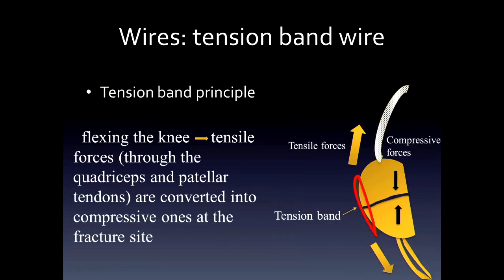Wires are also used to compress a fracture site. This is called the tension band principle, and it's used in areas such as the knee and the elbow, where muscular forces tend to pull the fracture apart. The tension band principle is shown on the left: flexing the knee, for example, produces tension forces or tensile forces through the quadriceps and patellar tendons.